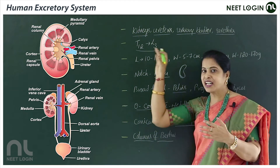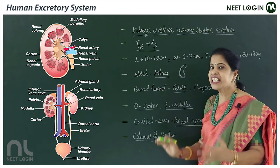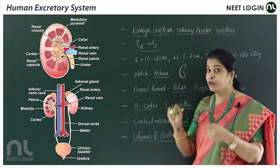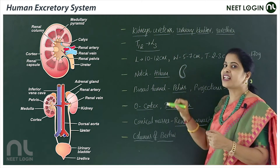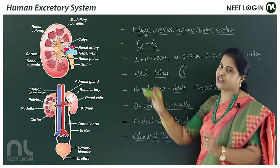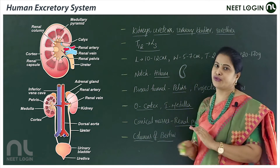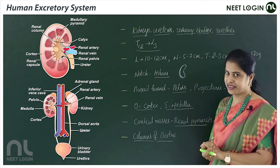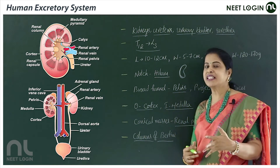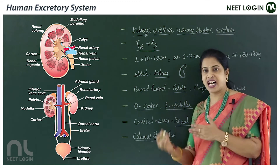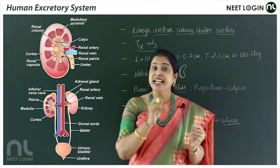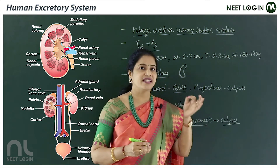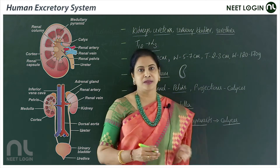To highlight key points: the kidneys are located from the last thoracic to the third lumbar vertebra, attached to the dorsal abdominal wall, and covered by a tough capsule. Key structures include the cortex, medulla, renal pyramids in the medullary region, the hilum notch, the funnel-shaped renal pelvis, the calyx or calyces, and the columns of Bertini as extensions of cortex into medulla.